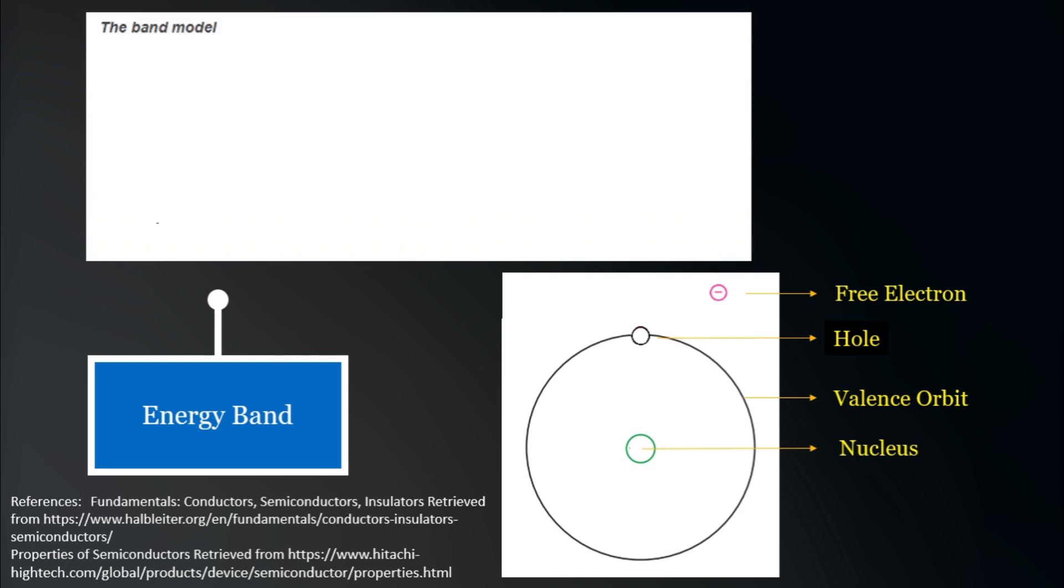To better explain this phenomenon, we use the band model. In this model, the vertical axis represent the energy level of an electron, and instead of a valence orbit, we have a valence band, where the valence electrons are located. This model also has a conduction band, where free electrons are located, and in between the valence and conduction bands, there is a band gap, also known as the forbidden energy band. As you may observe, there are no free electrons in the conduction band at the moment, because this is the band model for an insulator.